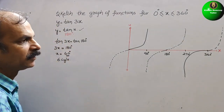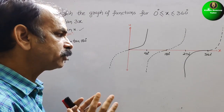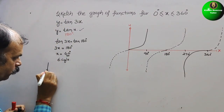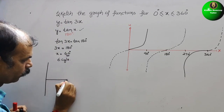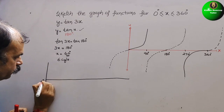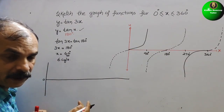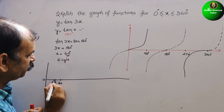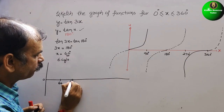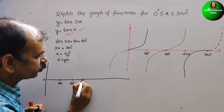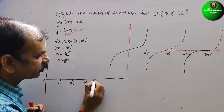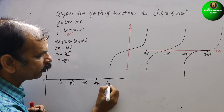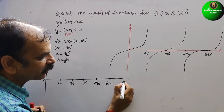Now if you draw tan 3x, we draw another wave. Starting from 0, the next point is 60°, and in between is 30°. Then comes 120°, then 180°, then 240°, then 300°, and finally 360°. These are the key x-axis markings for the tan 3x graph.